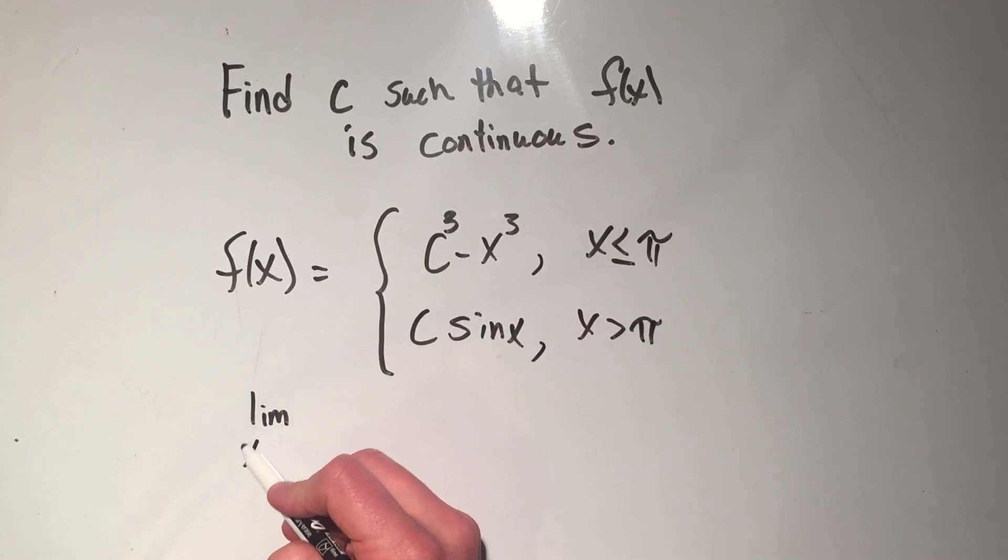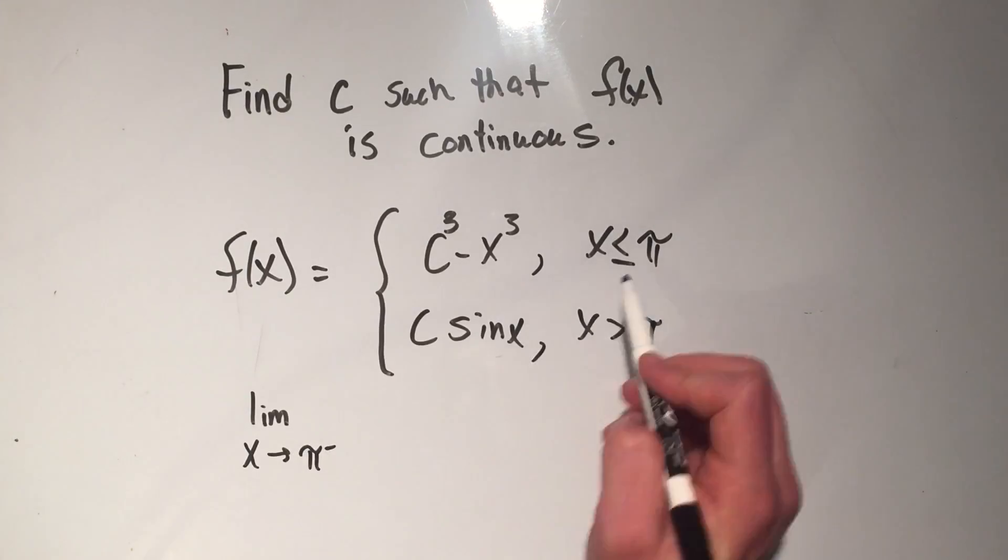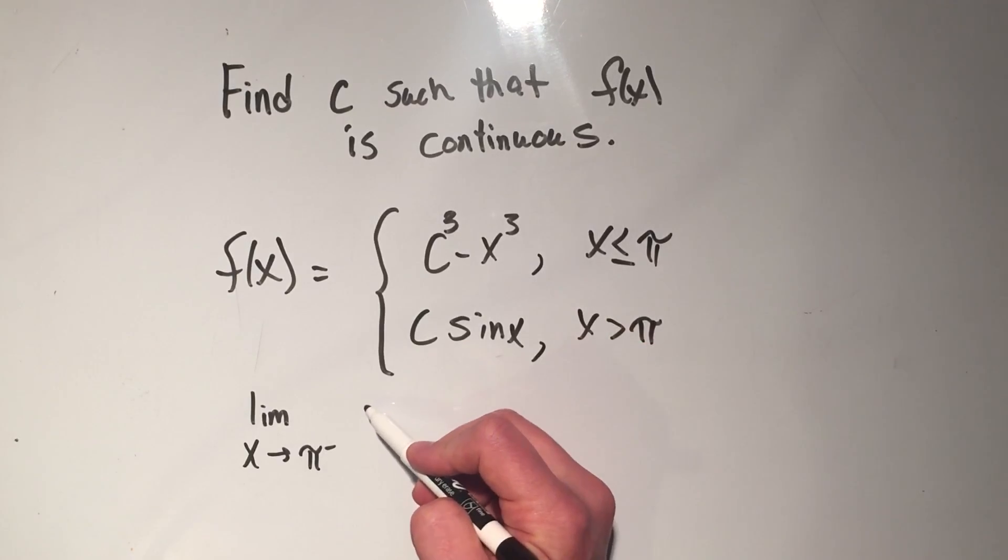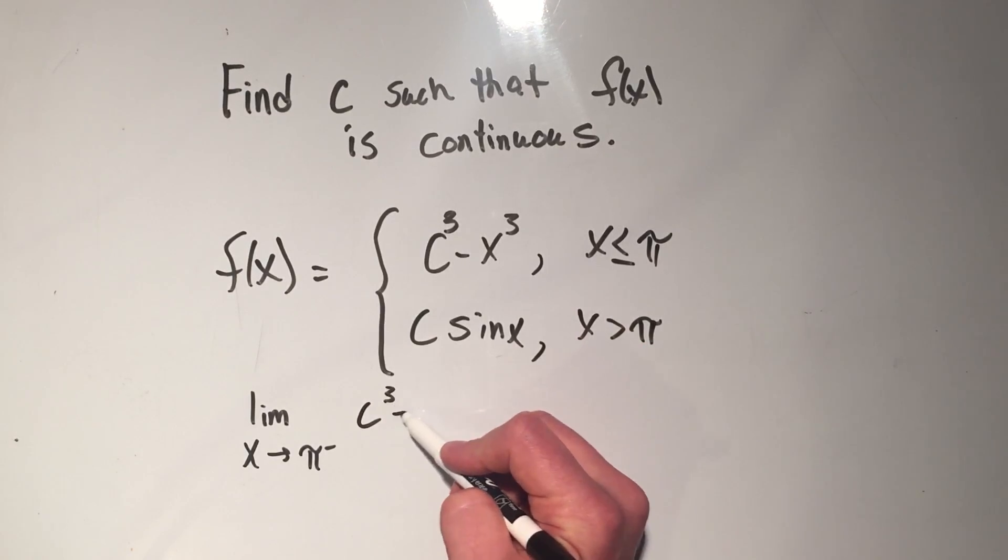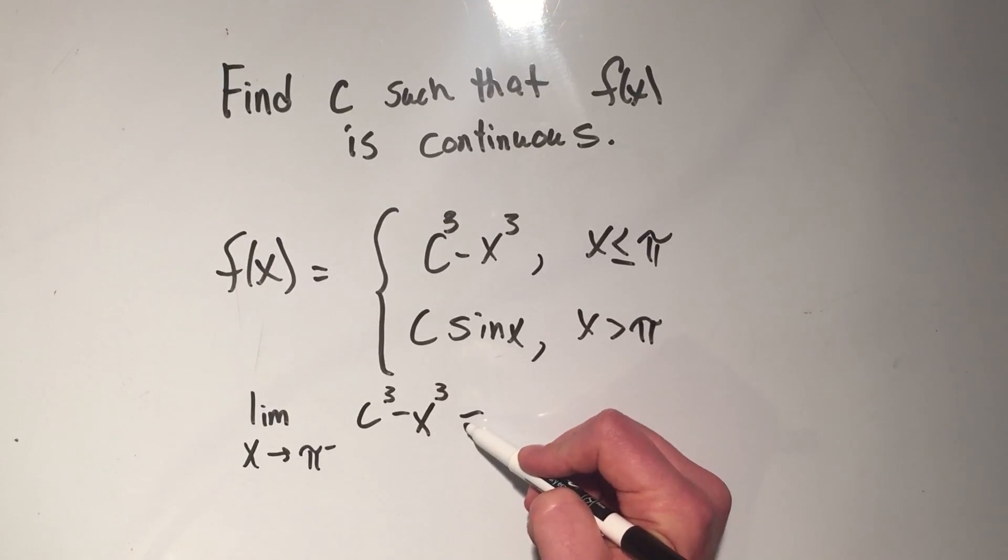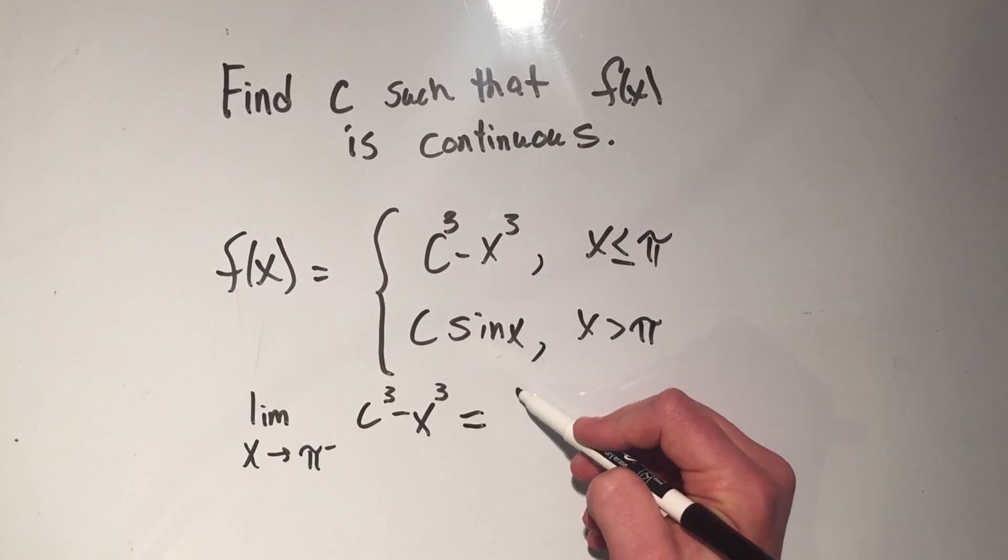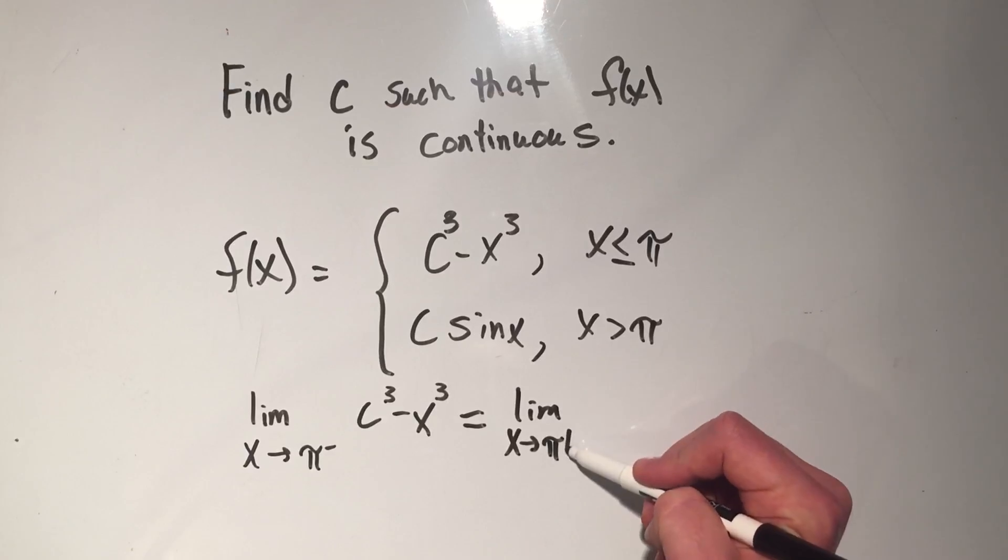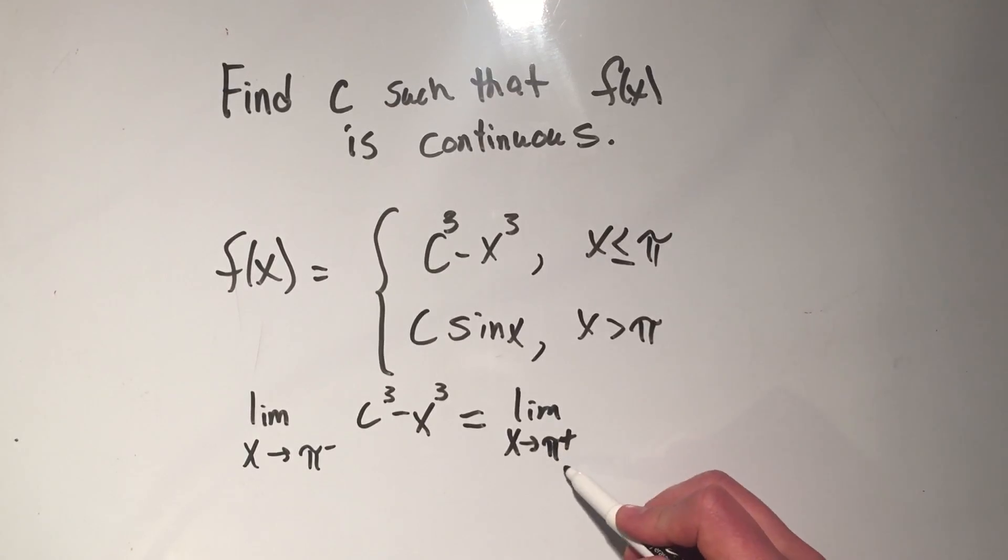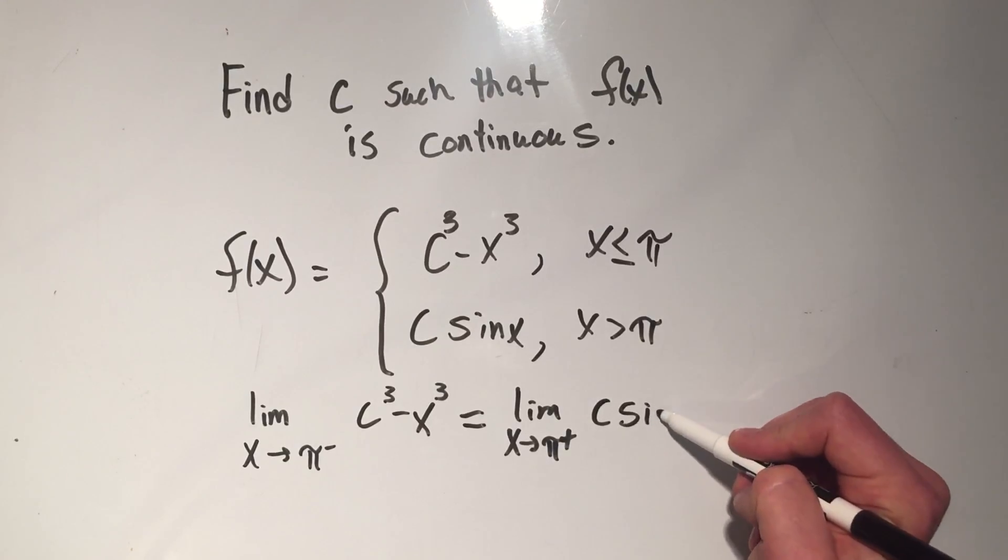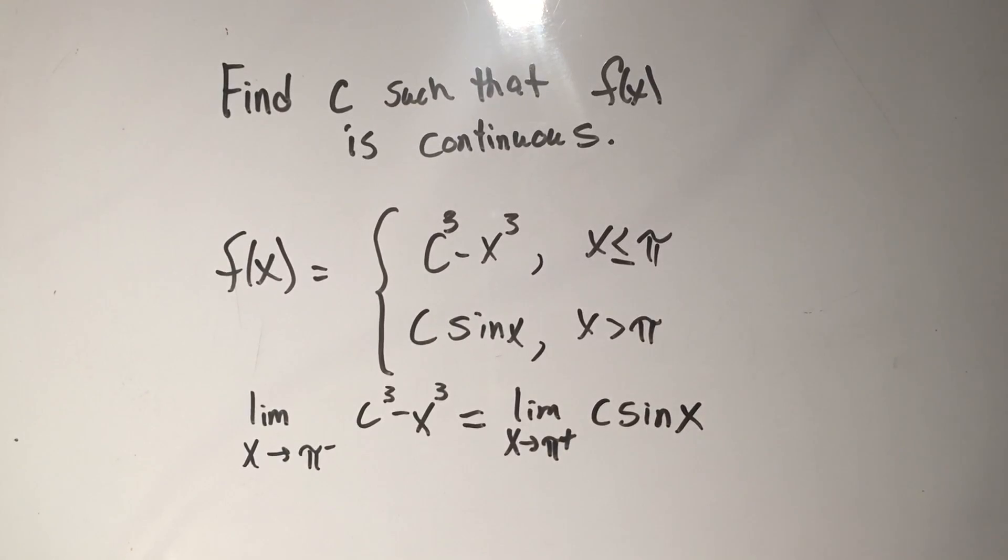I've got to approach pi from the left. And if I'm approaching pi from the left, that's when x is less than pi, that means I'm this first function, c cubed minus x cubed. And if I want this to be continuous, it has to equal the limit as x approaches pi from the right. And if I'm pi from the right, that's x bigger than pi, that's this function, c times sine x.